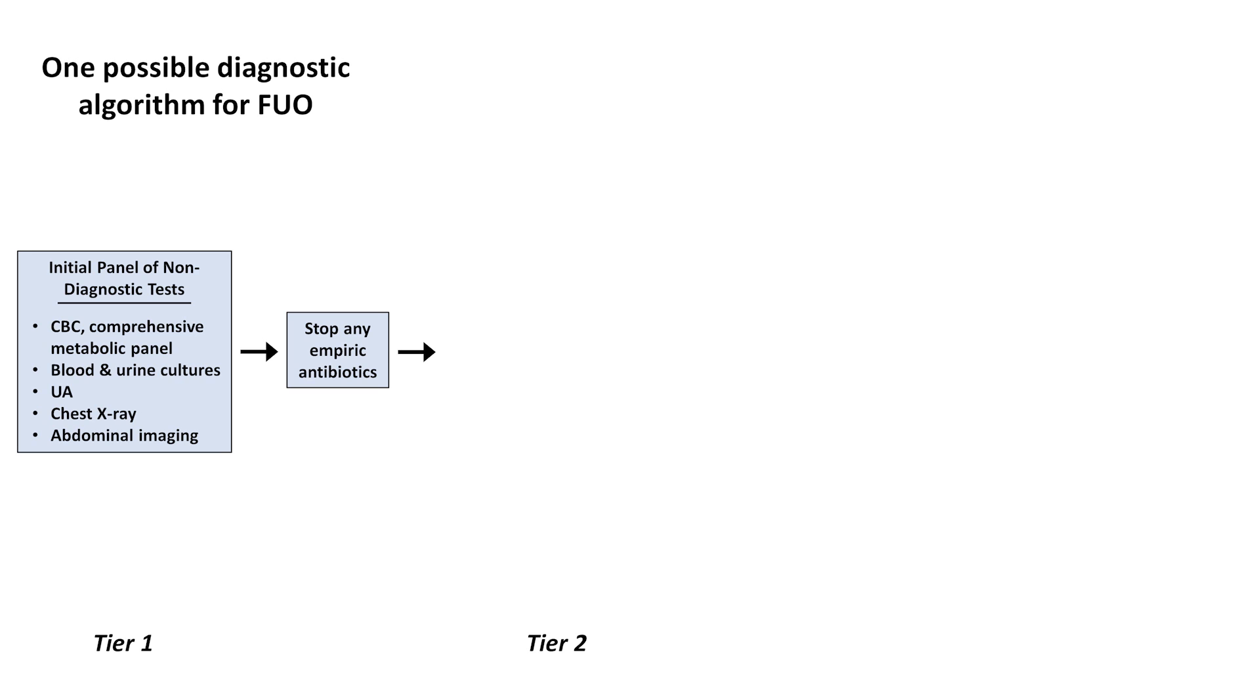Then in tier 2, one should repeat blood cultures. Check an HIV and an interferon gamma release assay for tuberculosis, just one example of which is the QuantiFERON test. Check LDH as a marker for hematologic malignancies. SPEP as a test for multiple myeloma. ANA to look for lupus and other autoimmune diseases. Anti-CCP antibody, which is seen in rheumatoid arthritis, ferritin, which can be extremely elevated in adult-onset Still's disease, and heterophile antibodies, which are found in EBV.